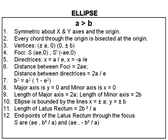A focal chord which is perpendicular to the axis of symmetry is called the latus rectum. There are two latus recta of this ellipse. Because of symmetry, the length of each latus rectum is 2b² upon a.